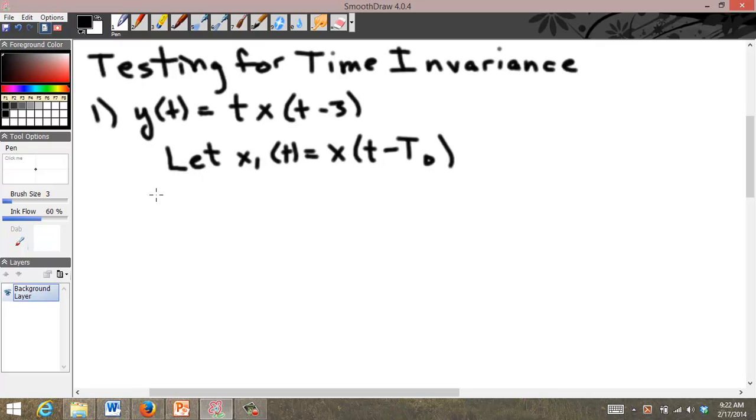So now, then y1 of t, the output due to this input, is t times x1 of t minus 3. Now I'm going to say, well, x1 of t is x of t minus t0.